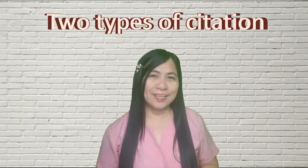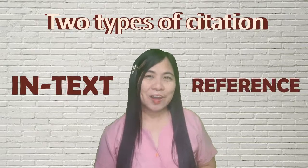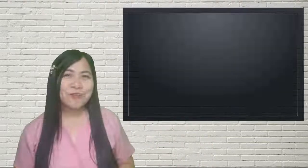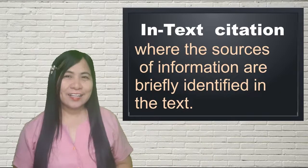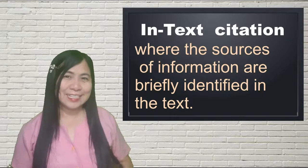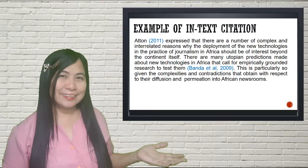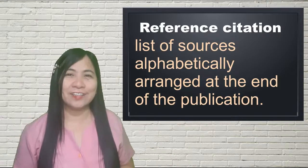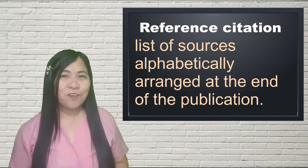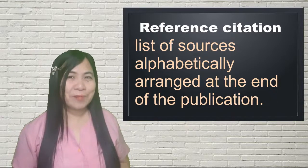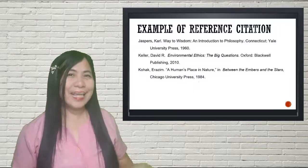Speaking of citation, there are two types: in-text citation and reference citation. Do you know the difference between the two? When we say in-text citation, the sources of information are briefly identified in the text, just like this. And when we say reference citation, it pertains to the list of sources alphabetically arranged at the last part of the publication or the paper, just like this.